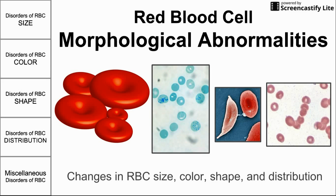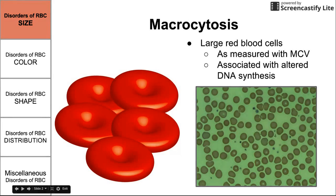Looking at these four images: the leftmost one has red blood cells of different sizes — some big, some small, some medium. We'll talk about what that's called and what it indicates. The color can change too; sometimes cells appear blue under the microscope, as in that second image. The shape can change, as in sickle cell anemia shown in the third image. The distribution of red blood cells can change as well, forming weird patterns like that row of cells in the rightmost image.